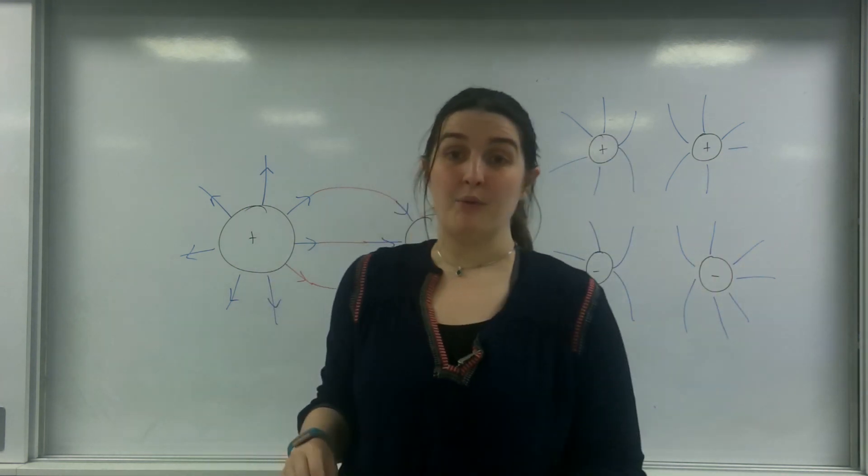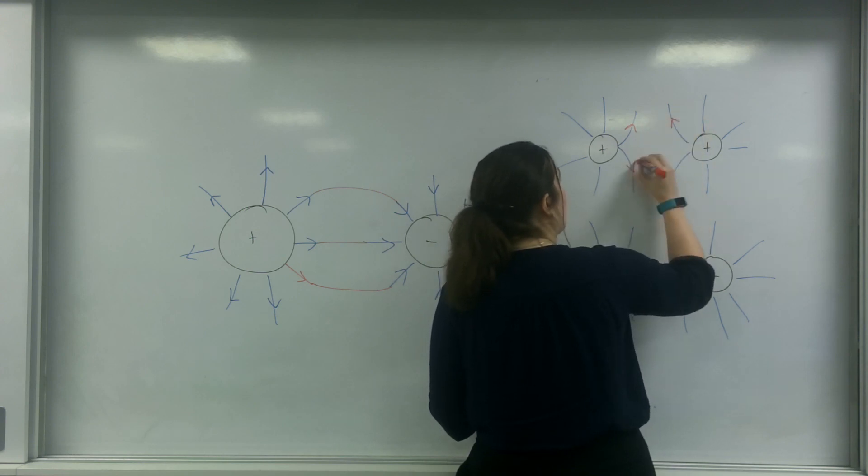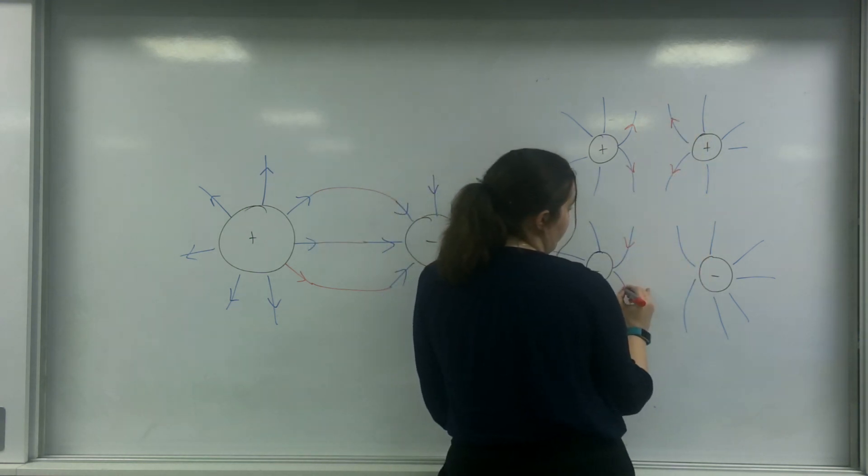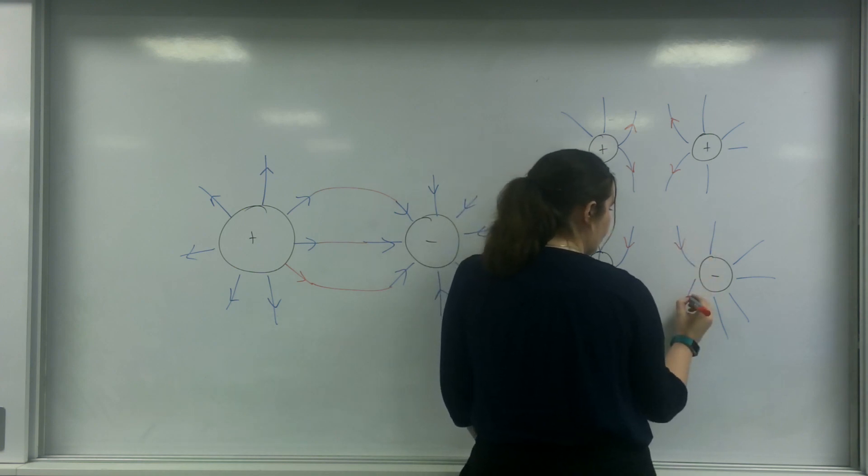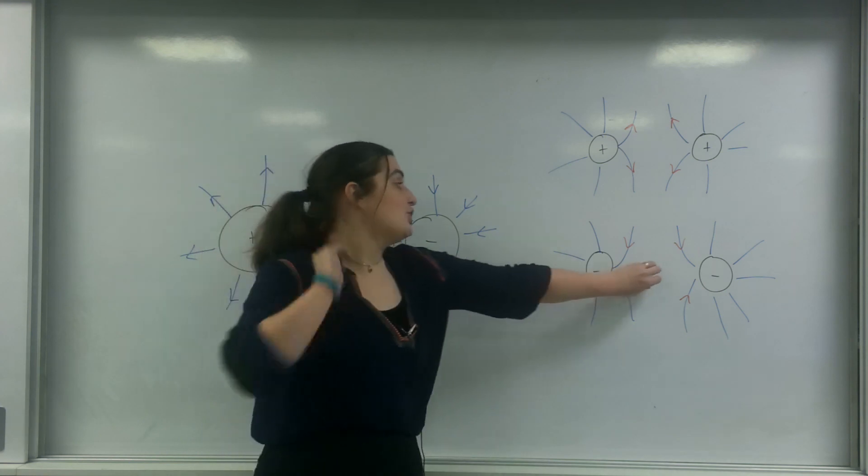And here the arrow is important. So for a positive charge, they'll be going away. And for the negative charge, they would be like this, going inwards. Now, this region here,